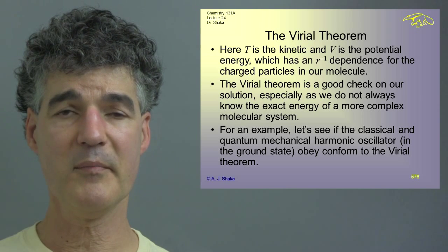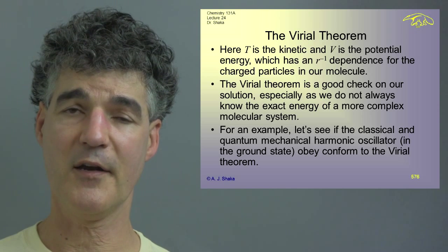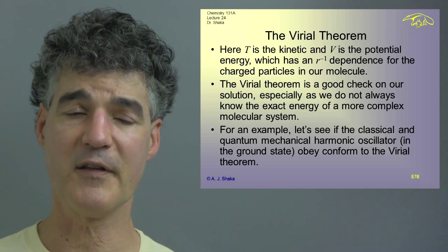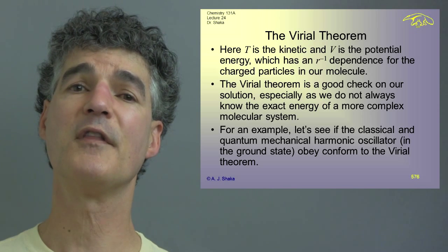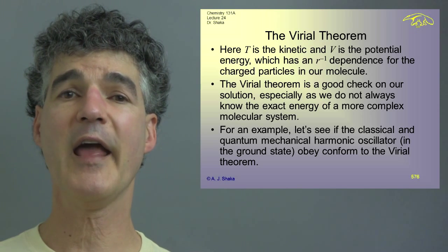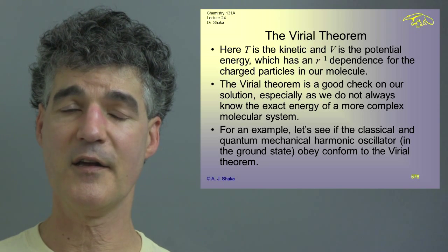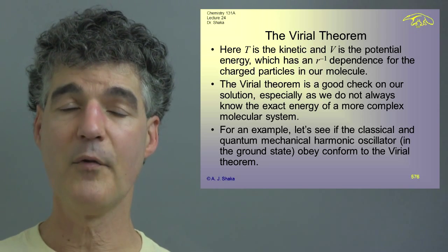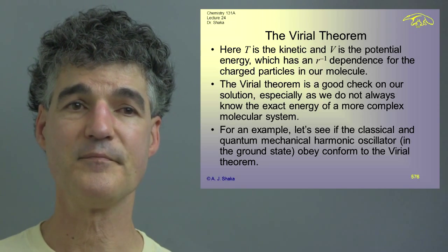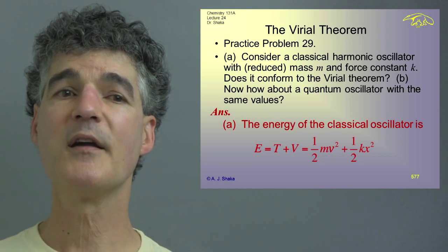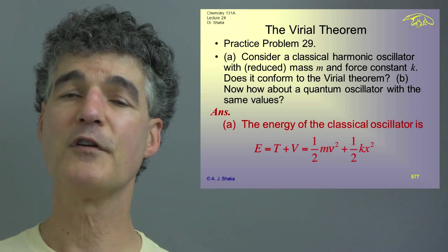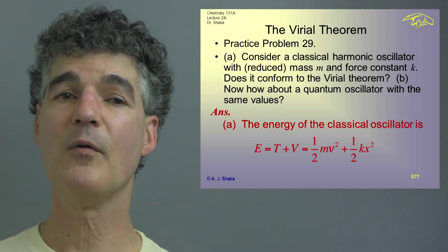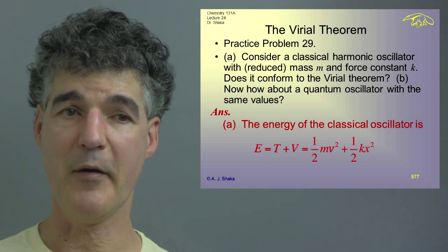As a practice problem, let's apply the Virial Theorem first to a classical harmonic oscillator — there was no quantum mechanics when Rudolf Clausius proposed this — and then to the ground state of the simple harmonic oscillator. Practice problem 29: consider a classical harmonic oscillator with reduced mass m and force constant k. Does it conform to the Virial Theorem? Part B: how about a quantum oscillator with the same values of k and m?